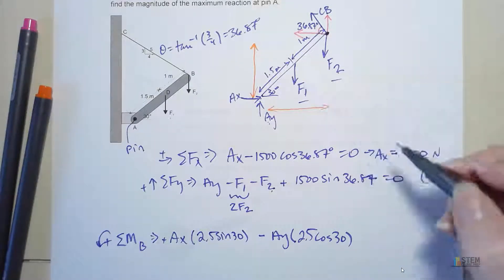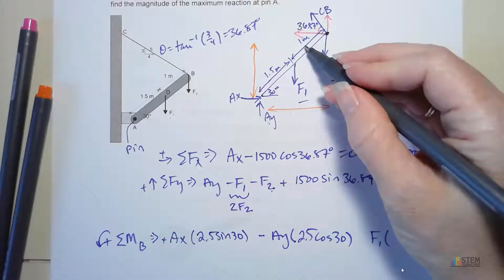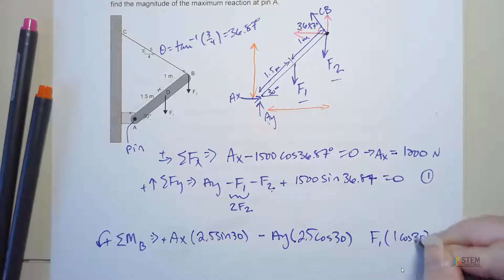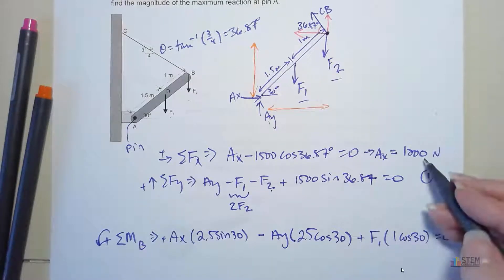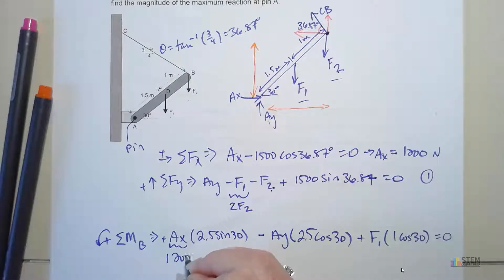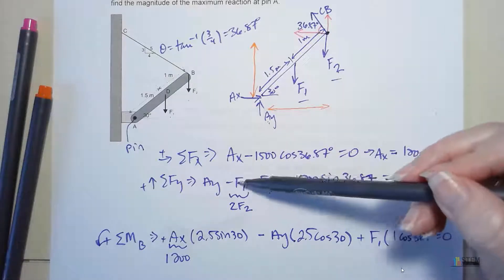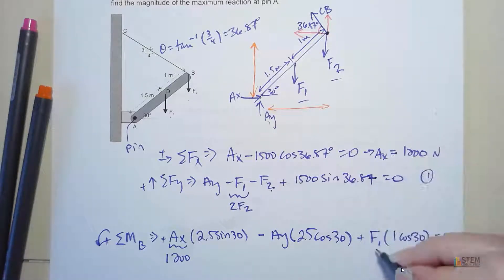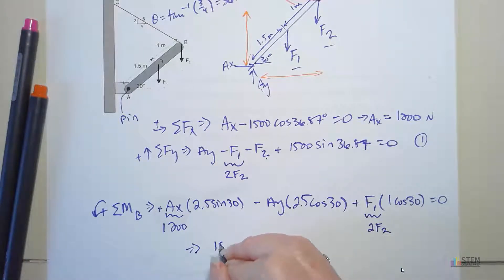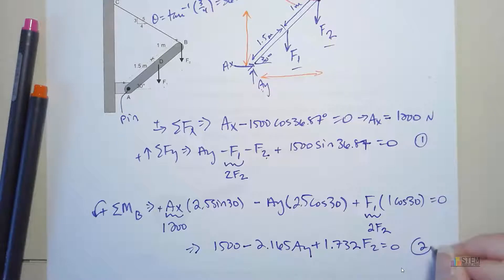Finally, the last force we need is F1. That distance is going to be 1 cosine 30. Is it positive or negative? It should be positive because that's counterclockwise. Then let's set that equal to 0. Now we already know Ax because we found that before. That was 1200. Now we've got Ay and F1. Up here I have Ay and F2, because I'm going to get rid of this F1 and replace it with 2F2. Let's go ahead and make that same substitution here. Substitute 2F2 in for F1. If you do that, what you get is 1500 minus 2.165Ay plus 1.732F2 equals 0. Let's call that equation 2.